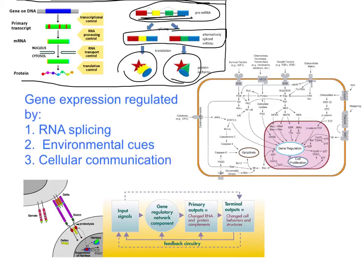Environmental cues can tell us what gene should be expressed, which should be turned on, which should be turned off. Cellular communication can also tell us that — if a cell is surrounded by other nervous system cells, they can give that stem cell a cue to turn into a nervous system cell as opposed to a liver cell. These are three very broad ways that gene expression can be regulated. All of the cells in your body have the exact same DNA; it just depends upon which genes are currently being expressed.